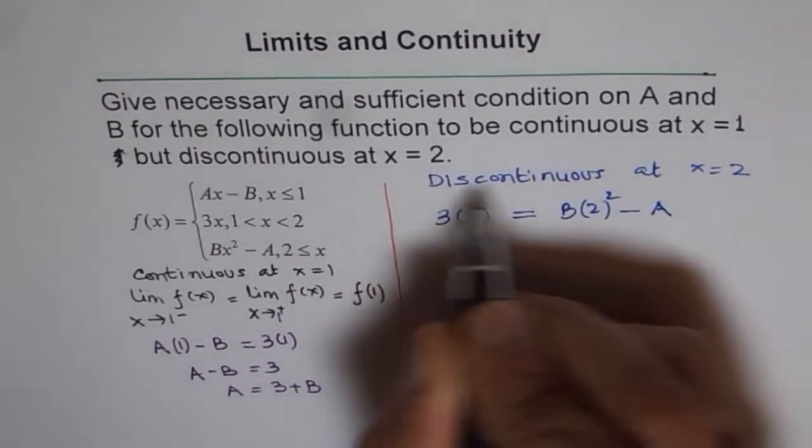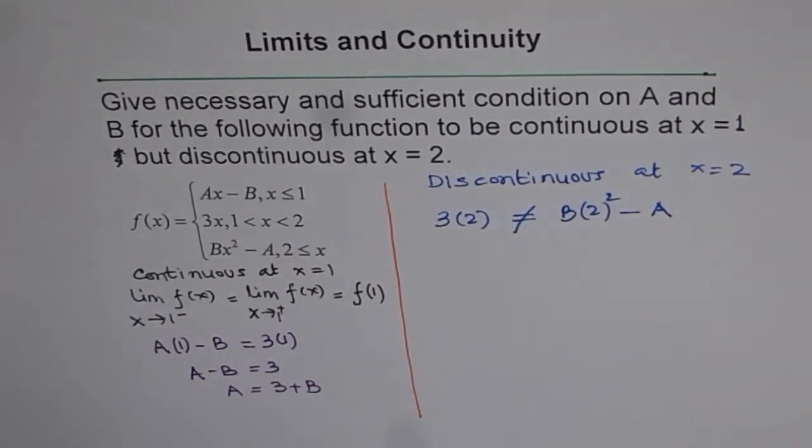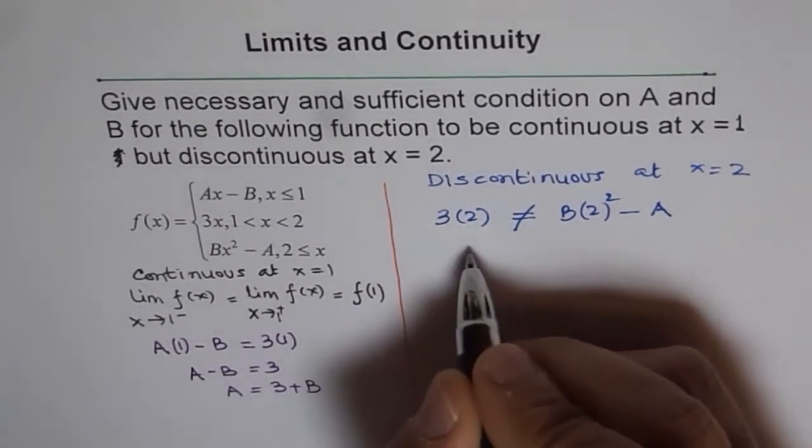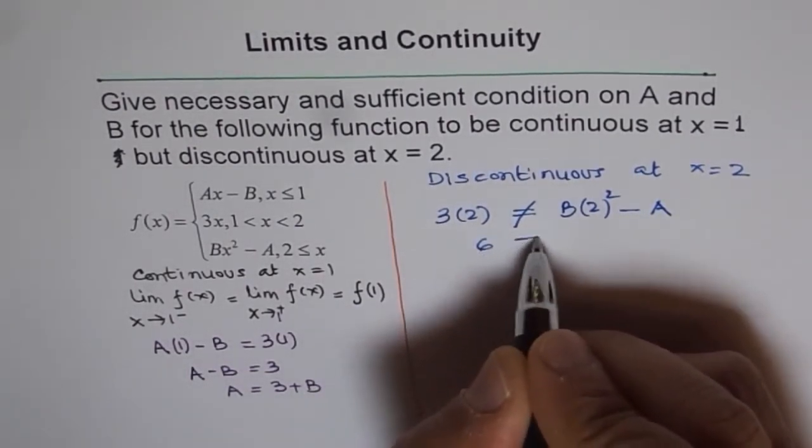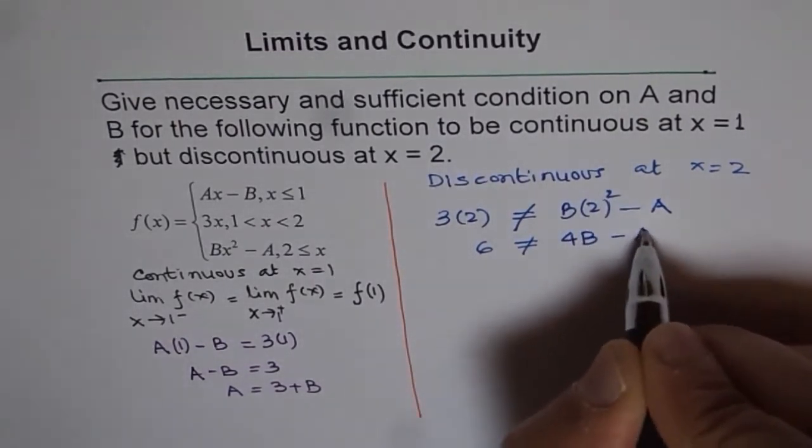Now this, when we say it is discontinuous, means this is not equal to. So that is the condition. So this is kind of tricky. Now we can solve for this and say 6 is not equal to 4B minus A.